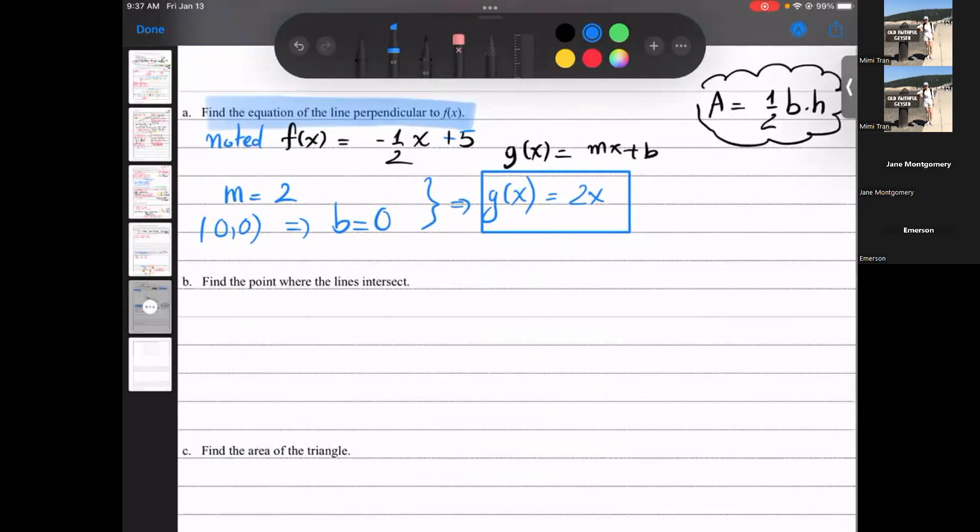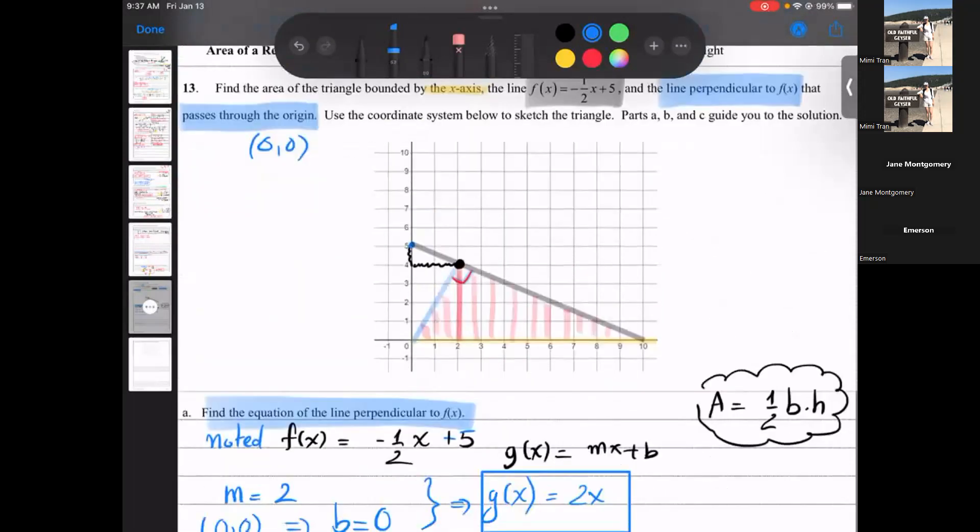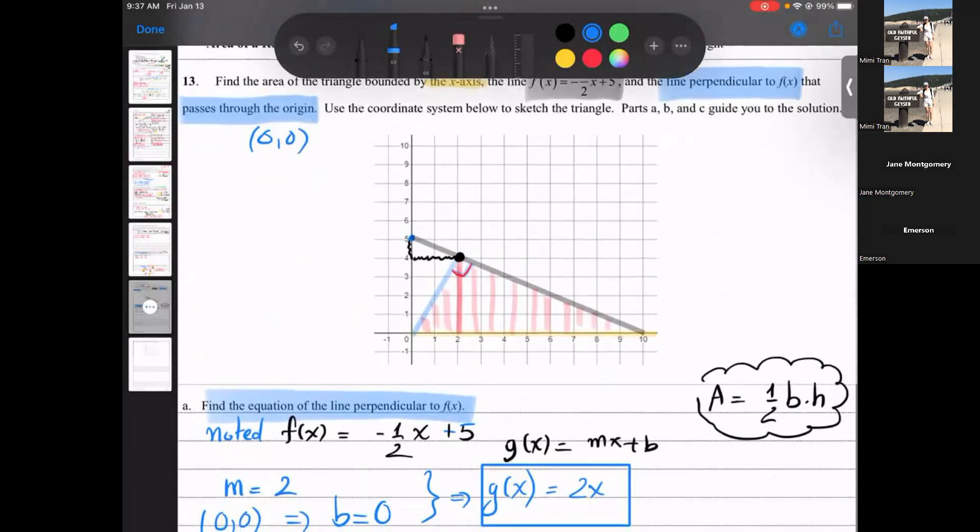All right, where's the point? So they want you to find that point right there, where blue line and black line intersect. What do you have to do? We just did it. We set them equal, right? Remember, where they intersect, they have the same height. They have the same height. So that's where the two functions equal. Functions are your height, right? So you set them equal.